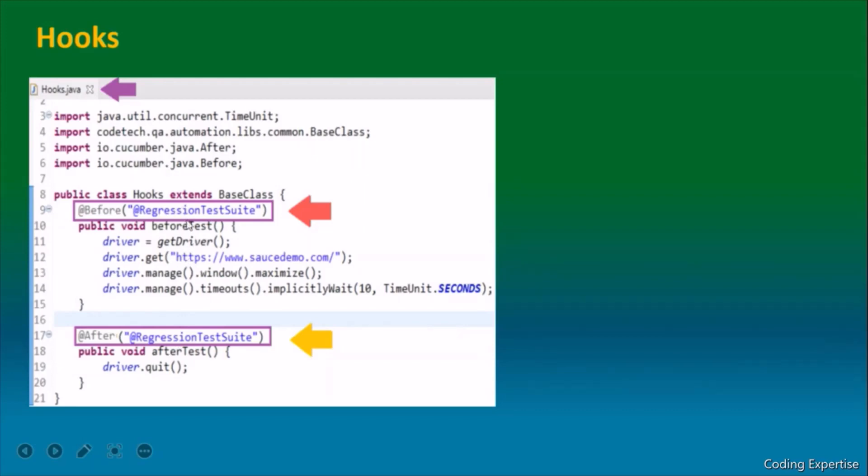We are trying to invoke a driver and then invoke a web page, SauceDemo.com. We are trying to maximize the window and setting up the implicit waits. Right after hook, we are trying to quit the driver. This is a basic example of hooks.